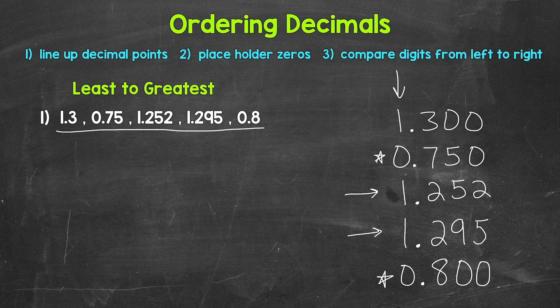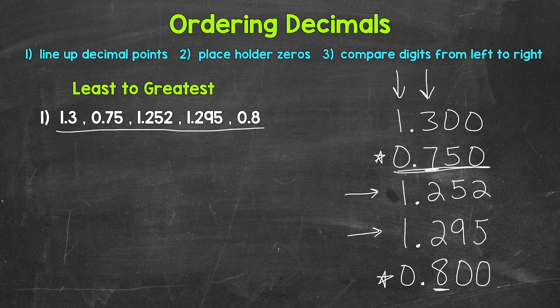Since those digits are the same, we go to the next place to the right to compare — that's going to be the tenths place. We have a seven and an eight. Having a seven and an eight, we know that seven is less than eight. So this is the least — let's write seventy-five hundredths first. I wrote the decimal from the original list, seventy-five hundredths, not the equivalent decimal with the placeholder zero, seven hundred fifty thousandths. Those are equivalent, so either will work, but I'm going from the original list.